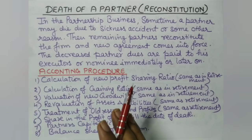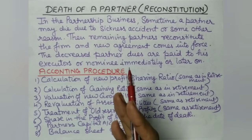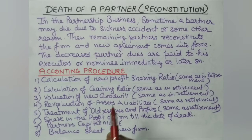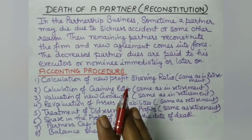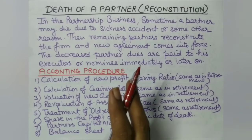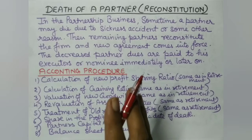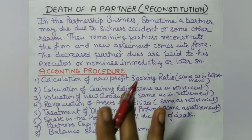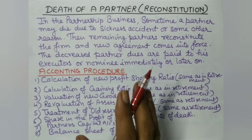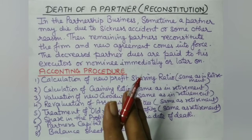Because death is always an unexpected event — it can happen 4 months, 4 days, or 6 months after the accounting year started. So the time the deceased partner was alive and working with the firm, contributing to its operations and sales, we calculate an estimated share of profit for that period up to the date of death. We calculate the estimated profit and credit the deceased partner with his share of profit.